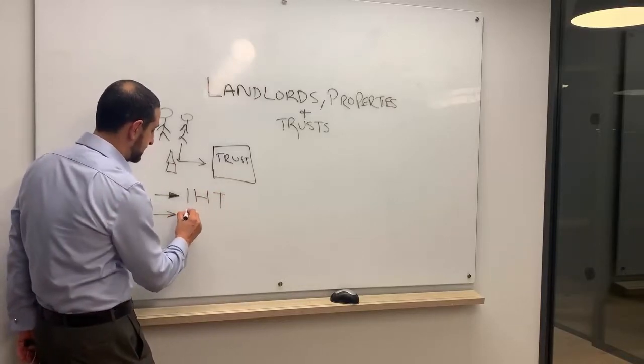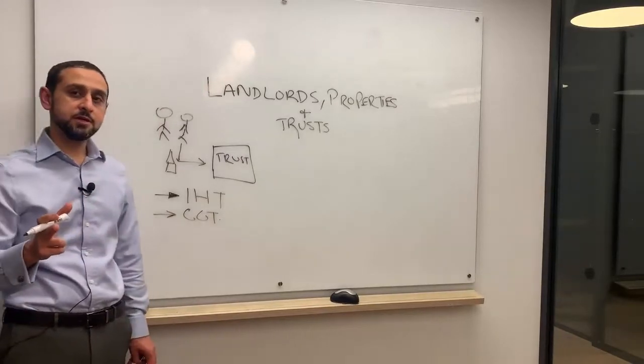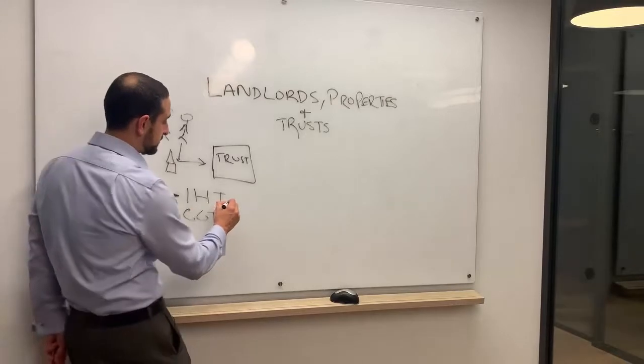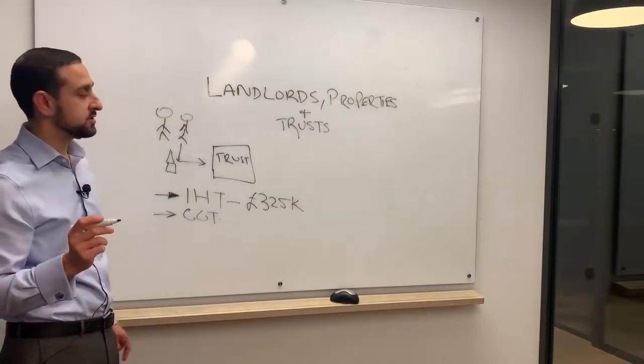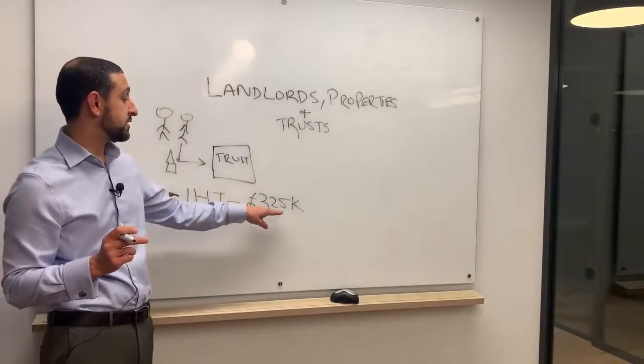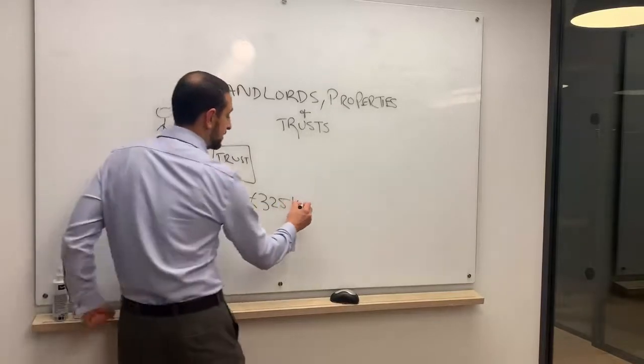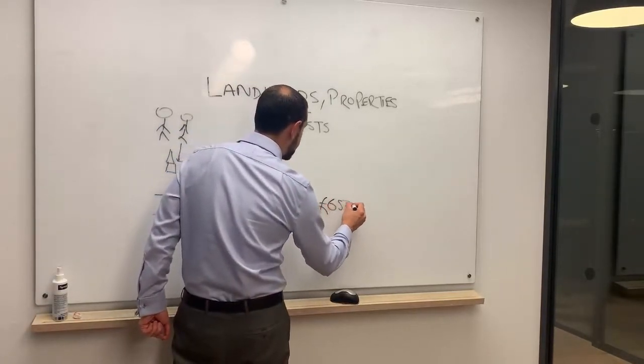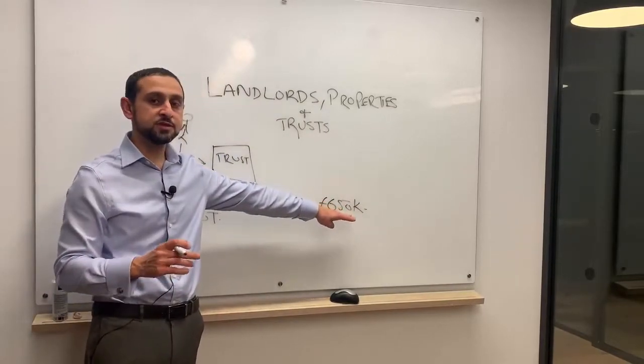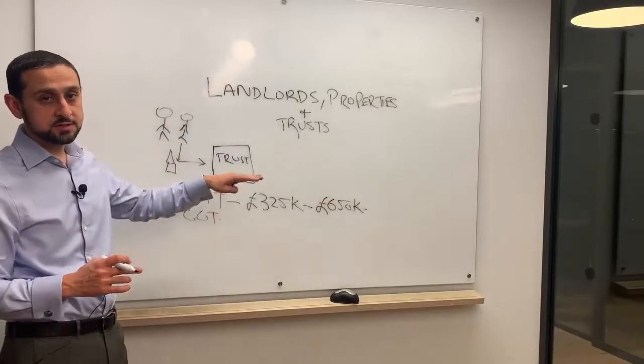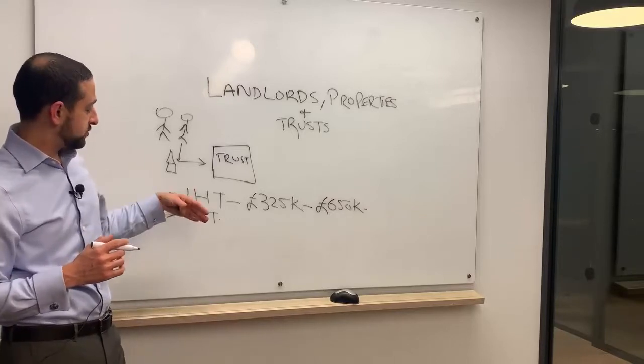Inheritance tax applies if the value of the property is more than £325,000. Above £325,000 per settlor, so if there's two of them that can be £650,000. Up to £325,000, or for two people up to £650,000, there is no inheritance tax charge because that's within the exempt amount.